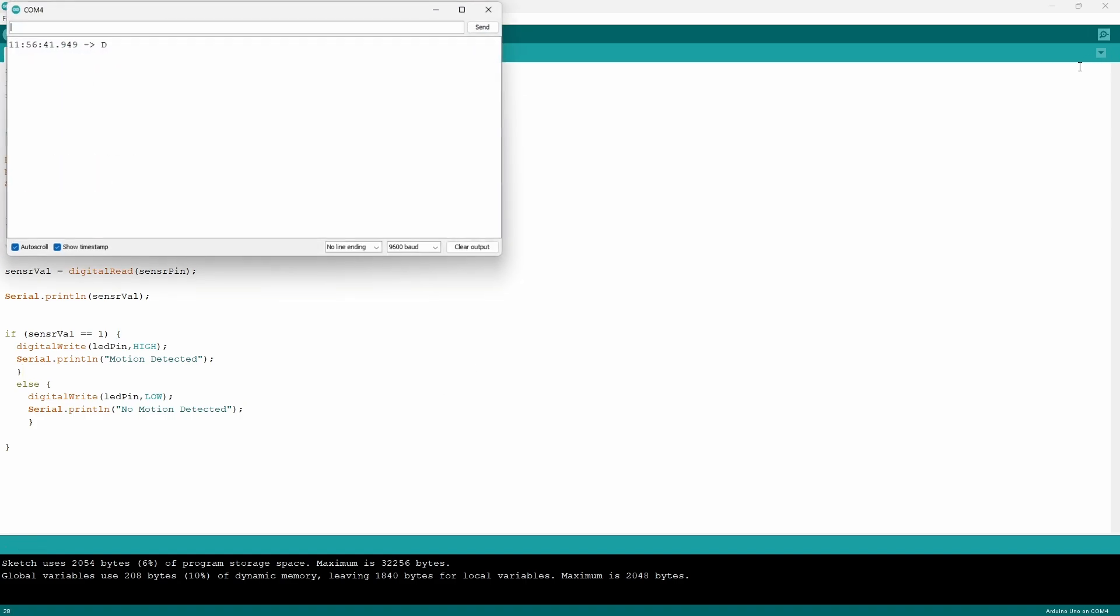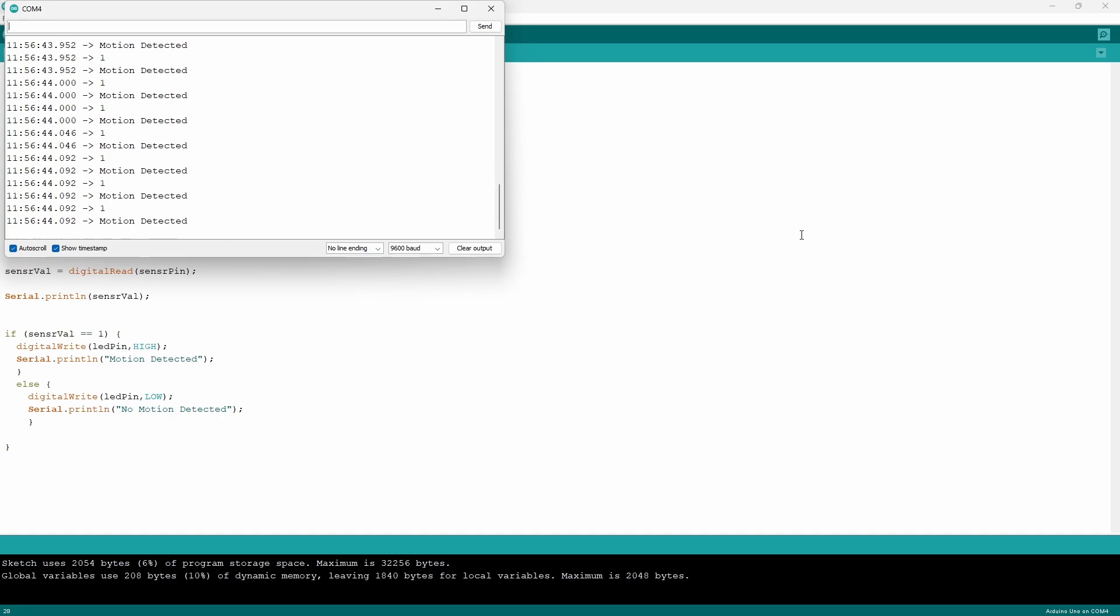Now looking at the values on the serial monitor you see that if I was to walk past the sensor it's going to output a high and therefore the LED is going to turn on. As soon as I get out of the field of the lens then the LED gets turned off and if I was to get back onto the view of the sensor the LED again turns on.